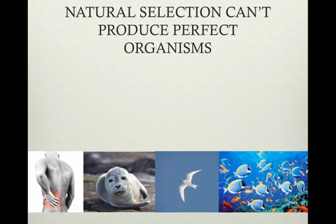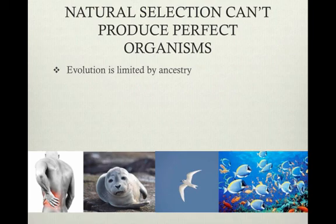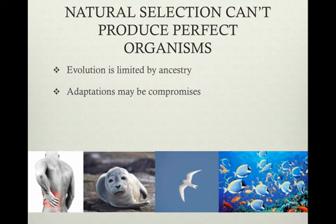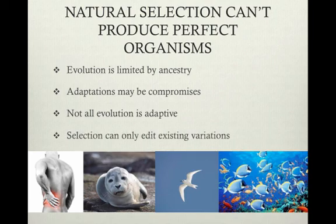There are reasons why natural selection can't produce perfect organisms. Evolution is limited by ancestry — problems can be carried from ancestors, for example, back problems due to modifications from four-legged ancestors. Adaptations may be compromises; for example, a seal could walk better on land if it had legs, but flippers are better in water. Not all evolution is adaptive — chance plays a role, and genetic drift may result in the perpetuation of a less desirable trait. For example, a bird blown to an island may not have the best genes in the population. Lastly, selection can only edit existing variations — only varieties that exist can be selected, and the best trait available may not be the best trait possible.